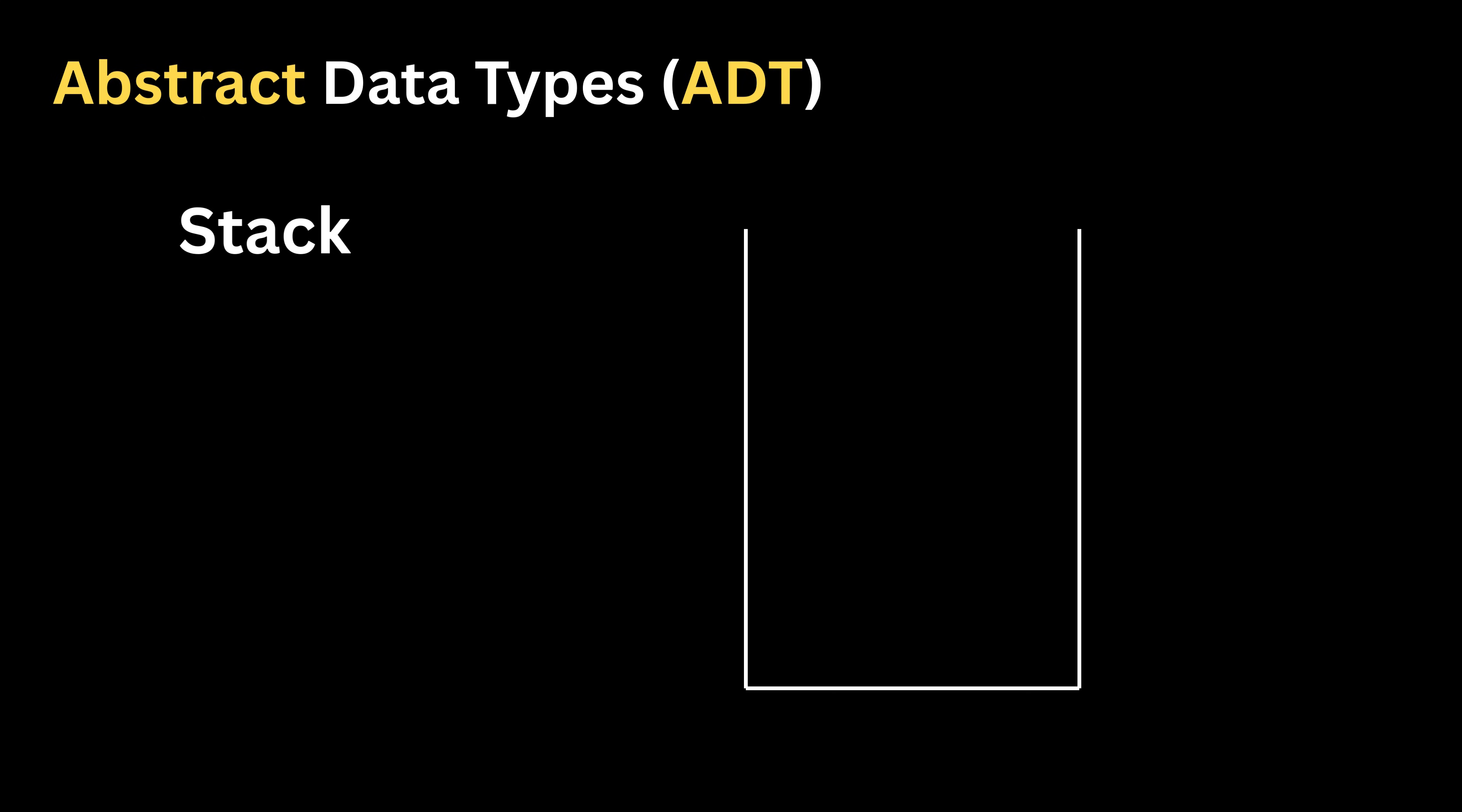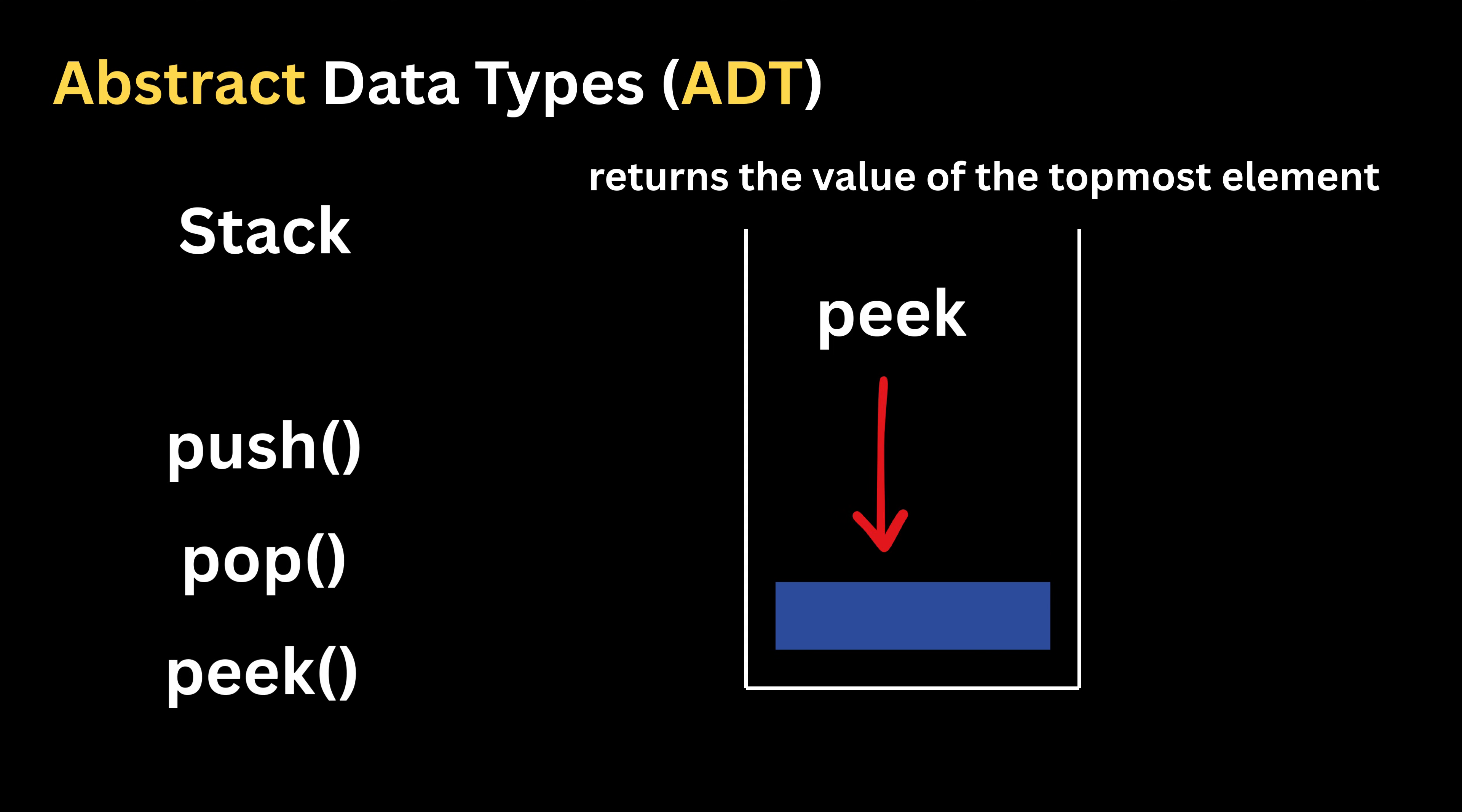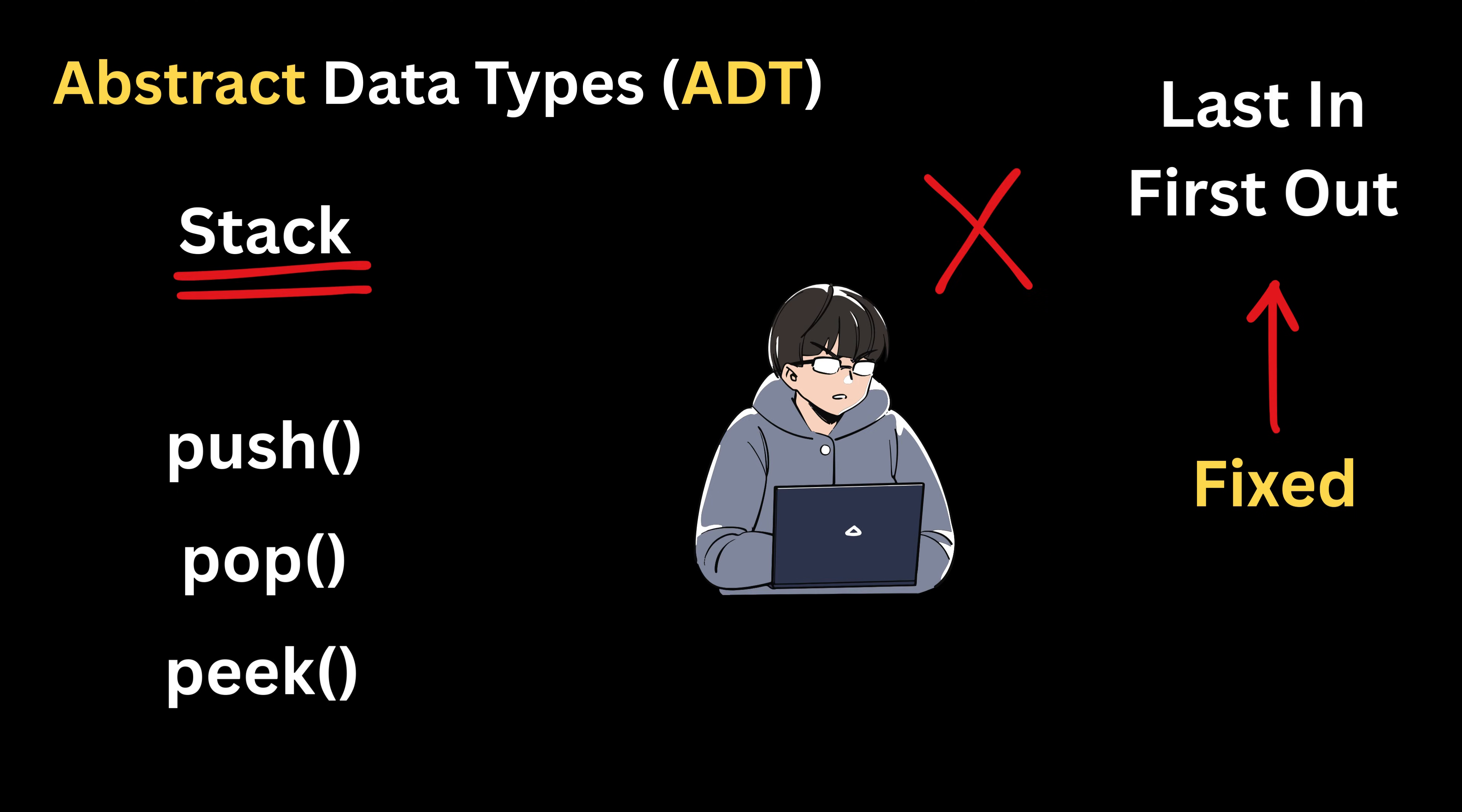For example, a stack is an abstract data type where items are added and removed from only one end called the top. It follows the rule last in, first out, meaning the last item you place is the first one you take out. A stack says we can push an item on top, pop the top item, and peek at the top item. The behavior is fixed, but the ADT does not tell us whether the programmer uses an array, a linked list, or something else internally.